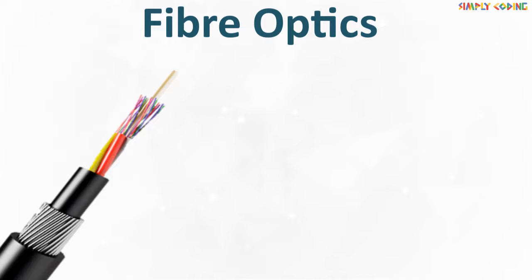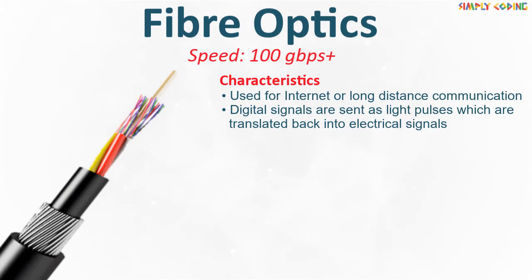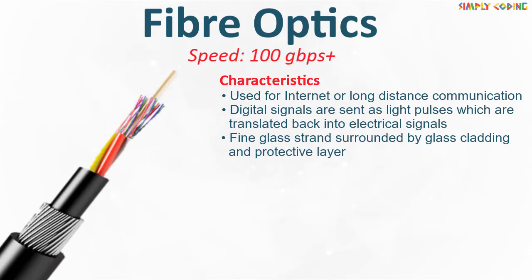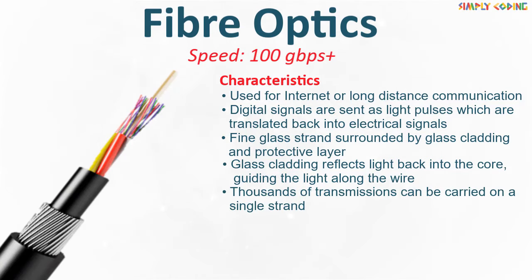Next is fiber optics. Here the data transmission speed is more than 100 Gbps. It is used for internet or long distance communication. Digital signals are sent as light pulses which are translated back into electrical signals. It has a fine glass strand as core surrounded by glass cladding and a protective layer. The glass cladding reflects light back into the core, guiding the light along the wire. Thousands of transmissions can be carried out on a single strand.